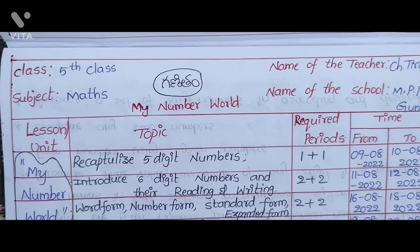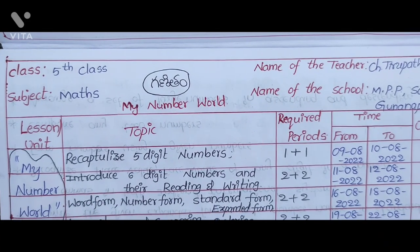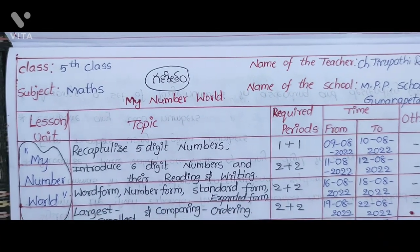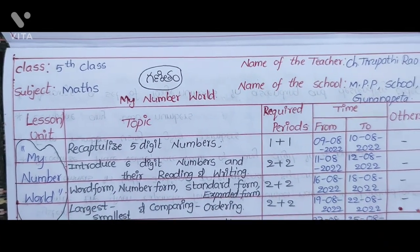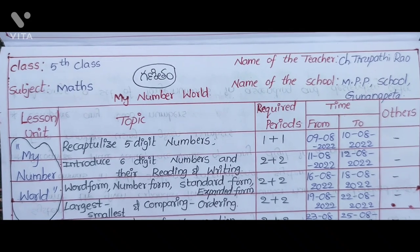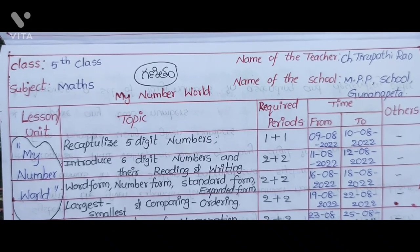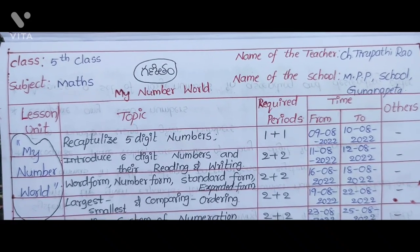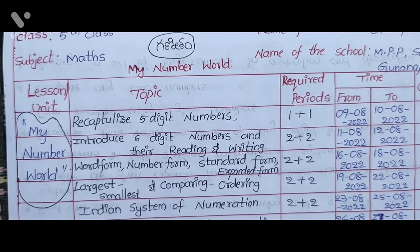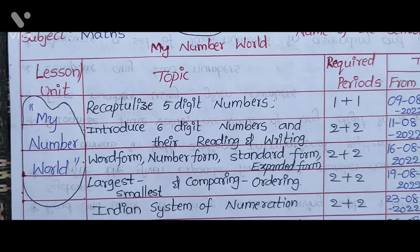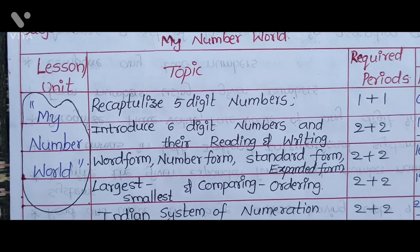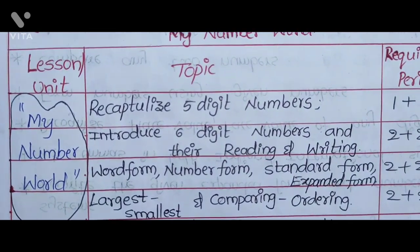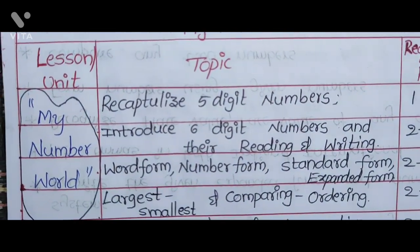The next section is the Lesson Plan. Class: 5th Class. Name of the Teacher: C.H. Thirupit Rao. Subject: Maths. Topic: My Number World. Name of the School: M.P.P. School, Gonan Peta. Lesson or Unit: My Number World.